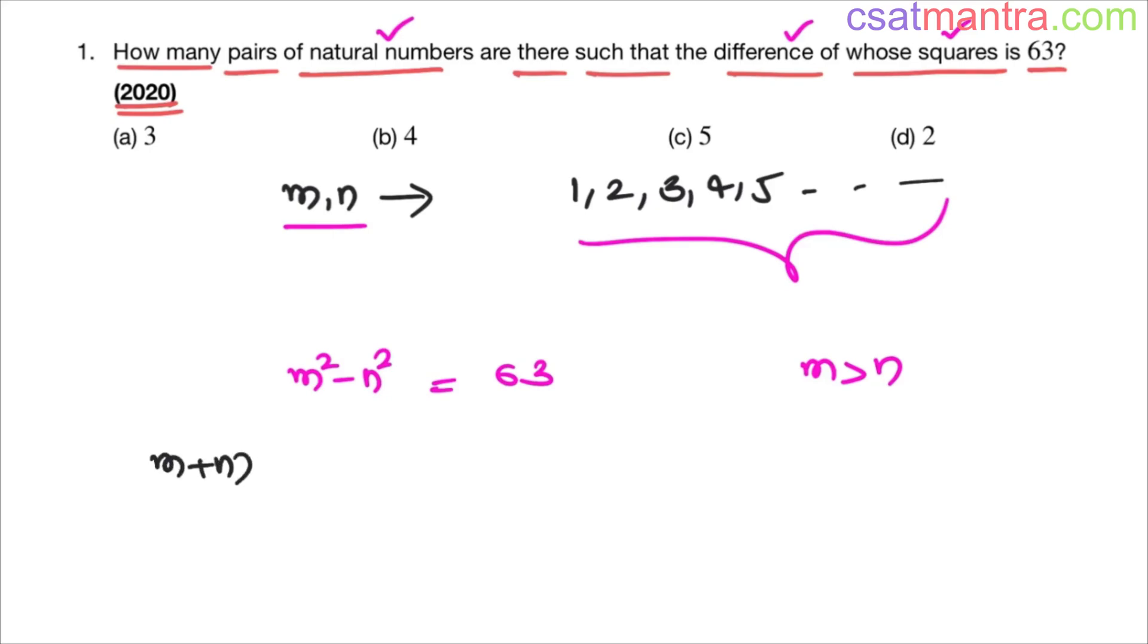So I'm writing this as m plus n into m minus n, 63 is 3 into 3 into 7. a square minus b square formula, a plus b into a minus b. 63, any number can be written as product of prime numbers.